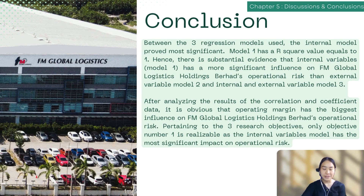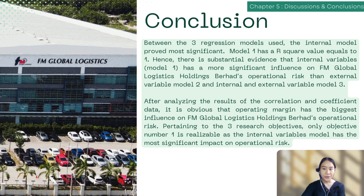Moving to Chapter 5, to conclude the study: among the three regression models, only model one — the internal model — proved most significant, with an R-squared value equal to 1. There is substantial evidence that internal variables have a more significant influence on the company's operational risk than external variables (model 2) or combined internal and external variables (model 3). After analyzing correlations and coefficients, operating margin has the biggest influence on operational risk. Only research objective one is realizable, as the internal variables model had the most significant impact.